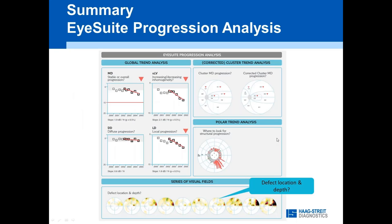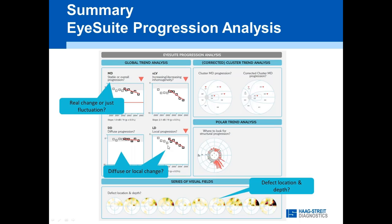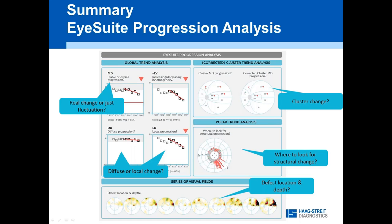To summarize: the series gives you the absolute location and depth of defects, important for clinical decision-making. The progression analysis tells you about change and probability of change. The MD answers whether there's overall change or just fluctuation. The DD and LD progression tell you whether change is diffuse or local. The cluster trend analysis shows which clusters are changing. And the polar trend analysis shows where to look for structural change.